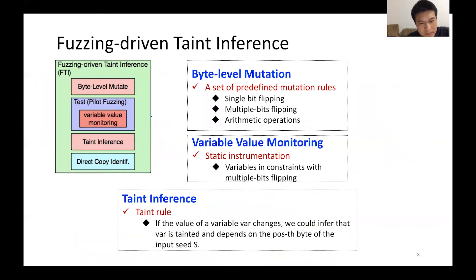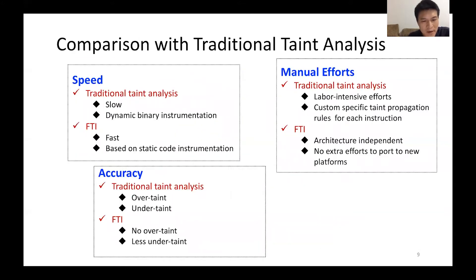In the FTI part, we define a taint rule: if the value of a variable changes when an input byte is mutated, we infer that the variable is tainted by that byte. We perform byte-level mutation with critical variables while monitoring. To make taint more accurate, we design a set of predefined mutation rules and only check variables in constraints. FTI infers taint fast by focusing only on checking relevant variables in critical branches, and it is architecture-independent, needing no extra effort to support new platforms.